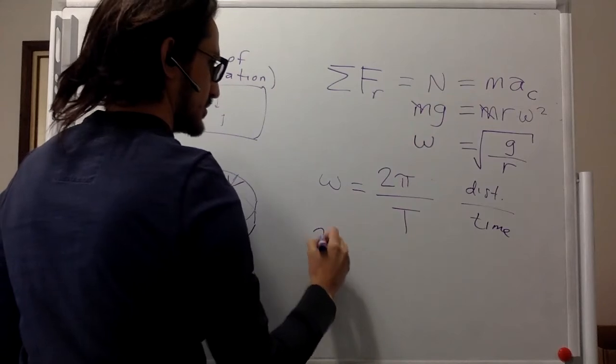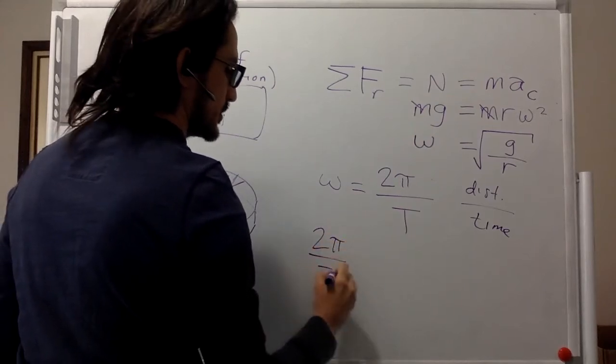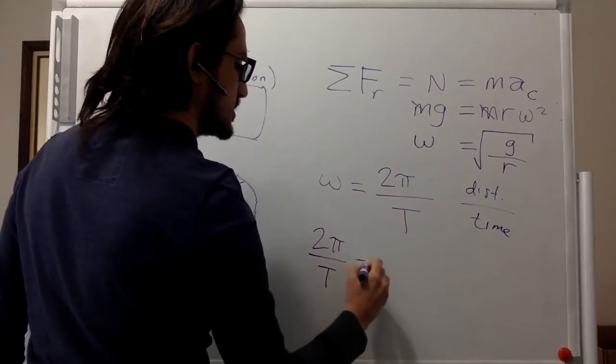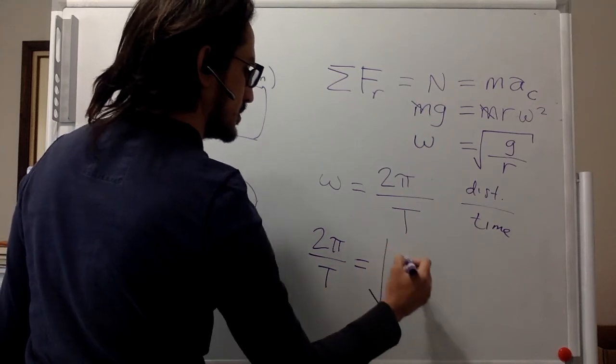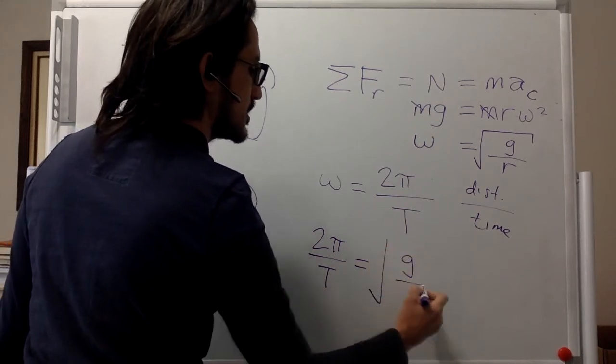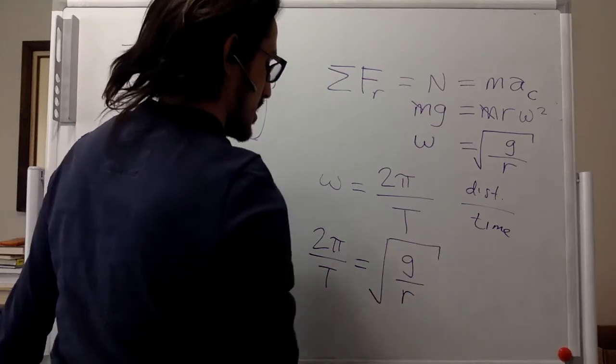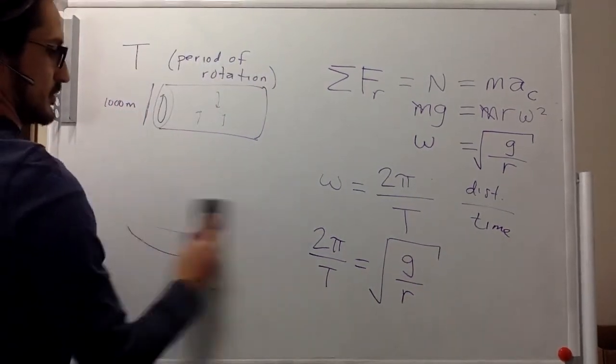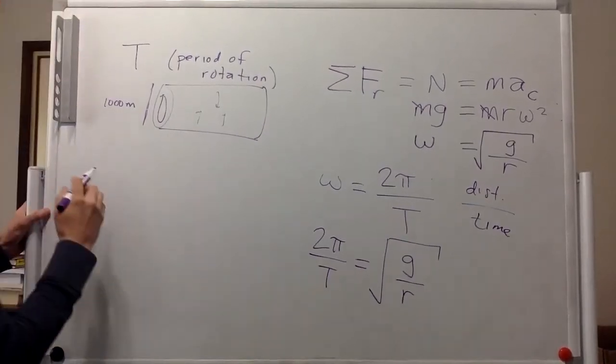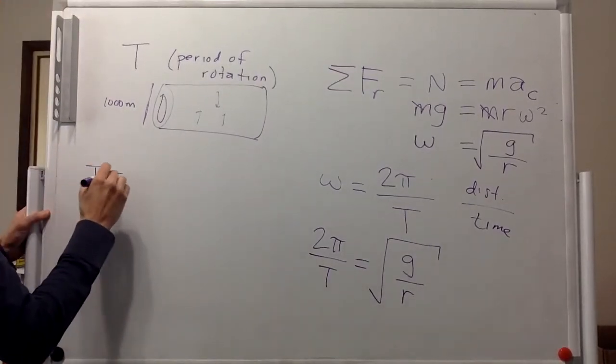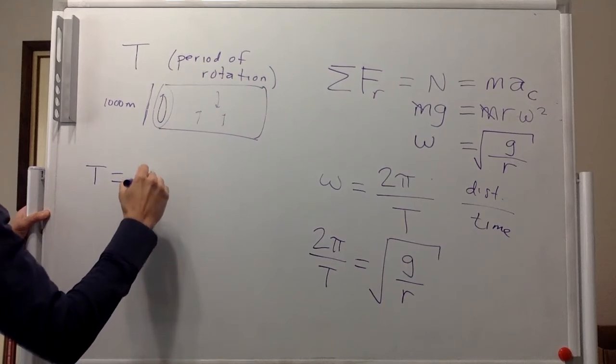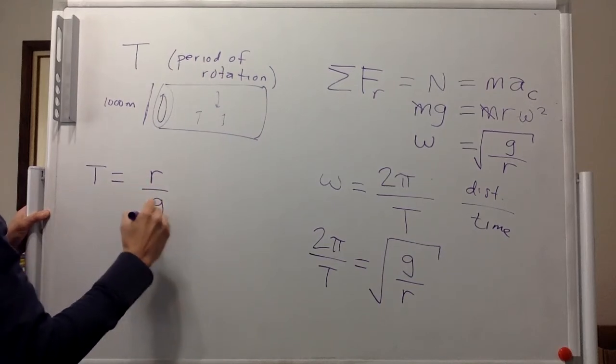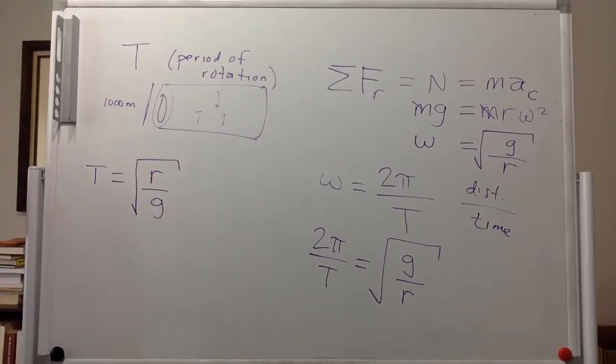And so that means that 2 pi over T is equal to square root of g over r. And we want to solve for T for the period. So T is going to be equal to 2 pi times the square root of r divided by g.